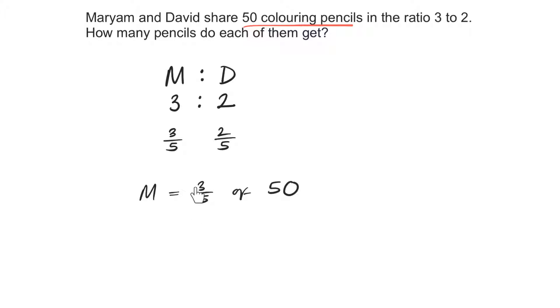And to work out 3 fifths of 50, remember when we are working out a fraction of an amount, we divide by the bottom times by the top. So, that's 50 divided by 5 is 10. 10 times 3 is 30. So, Mariam will get 30 colouring pencils.